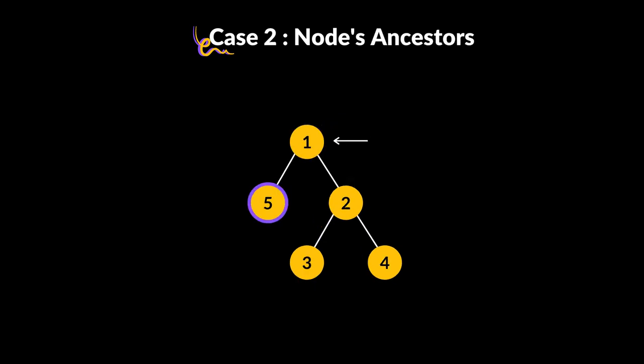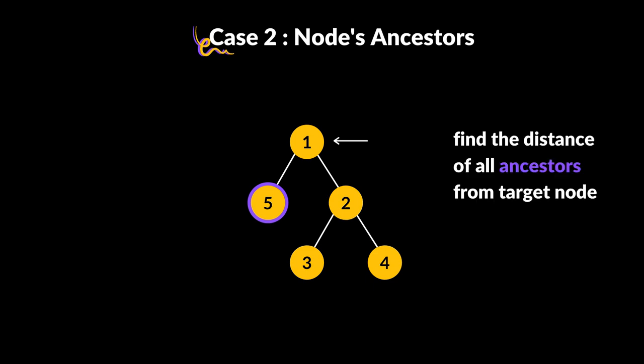For Case 2, we consider node ancestors. In our binary tree, the only ancestor of node 5 is node 1. We need to find the distance of all ancestors from the target node. The distance from 5 to 1 is 1, which we will store in a variable called d.